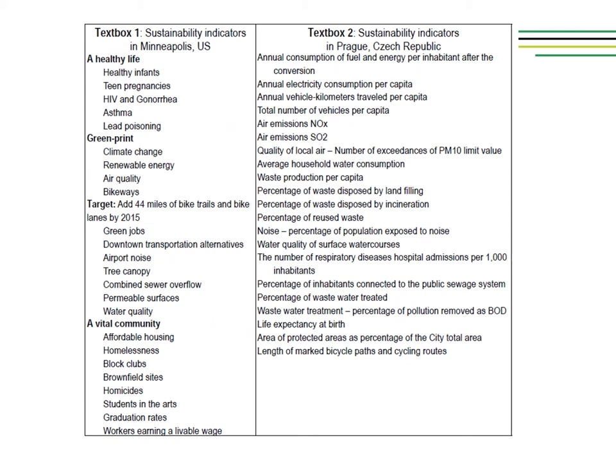Please take a look at text box number one and text box number two on this slide. They represent two examples of sustainability indicators from two cities — one is Minneapolis in the US and the other one is Prague in the Czech Republic. Please examine the type of indicators being used, whether they focus mostly on environmental data or include other types of data as well.